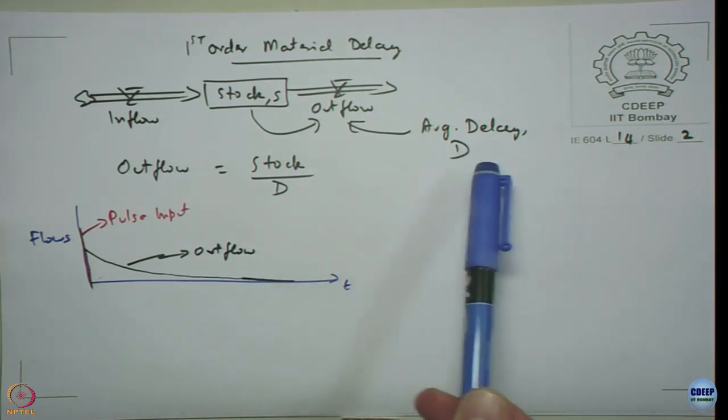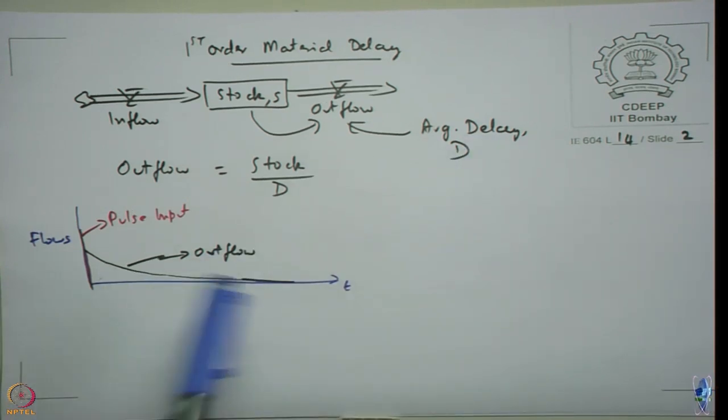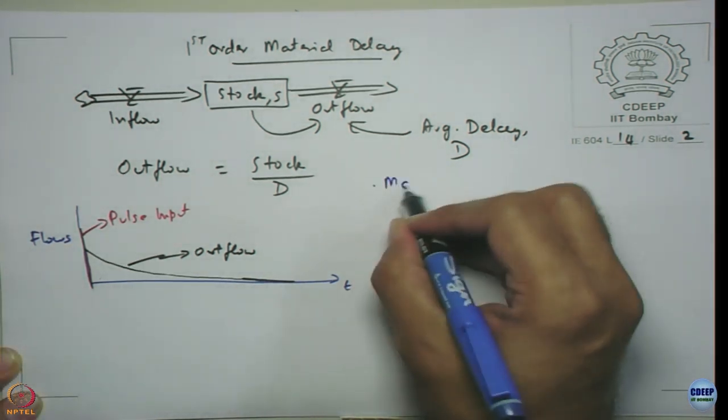Here we have modeled, we assume that average delay time is D. Will it indeed be D? Will the average indeed be D? Let us just answer this question.